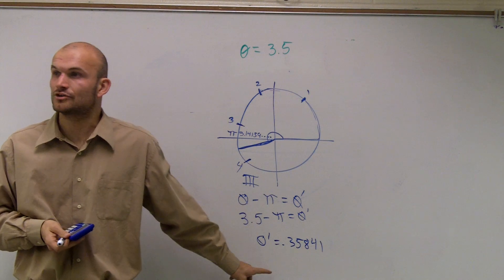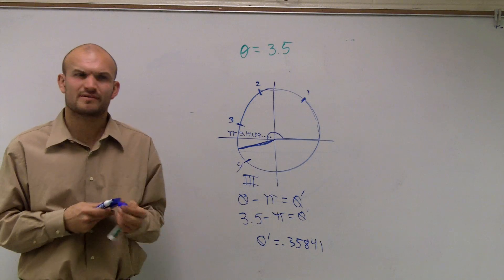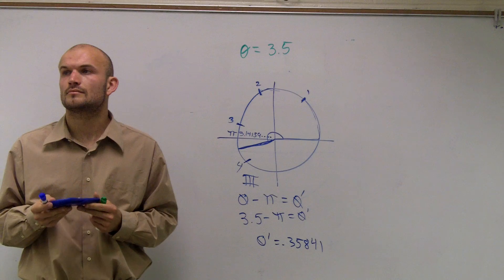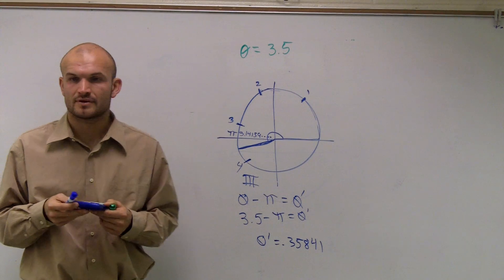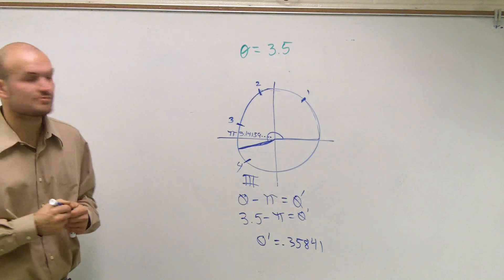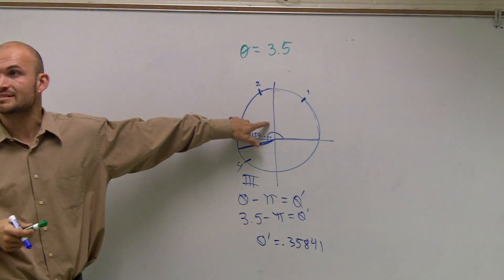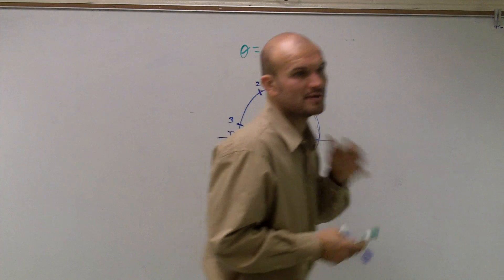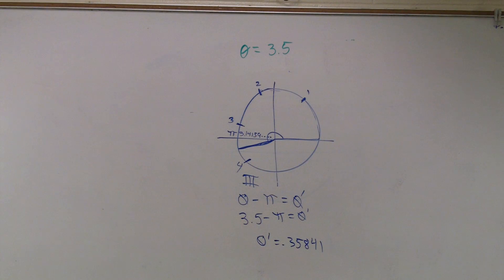So that is going to be the angle in radians of my reference angle. Anybody have any questions on that? I thought it was 1.8. No, it's going to be 0.35841. I thought it would be subtracted from 180. You subtract it from 180 if it's in the second quadrant. Just remember, there's three rules I gave you on reference angles. You're going to have to remember, it all depends on which quadrant it's in.